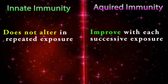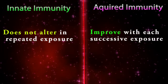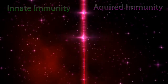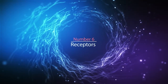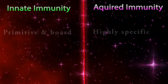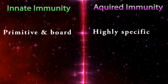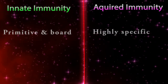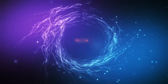Difference number five — does it change? Innate immunity does not alter with repeated exposure, but acquired immunity improves with each successive exposure. Difference number six — receptors: innate immunity receptors are primitive and broad, but acquired immunity receptors are highly specific.